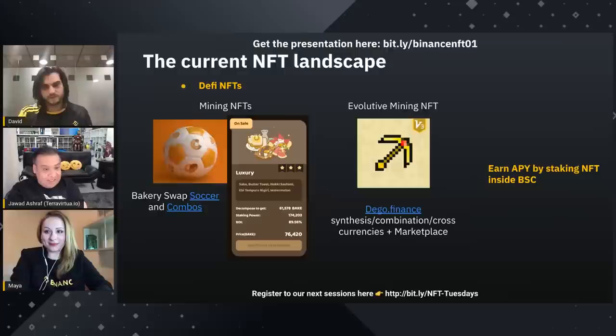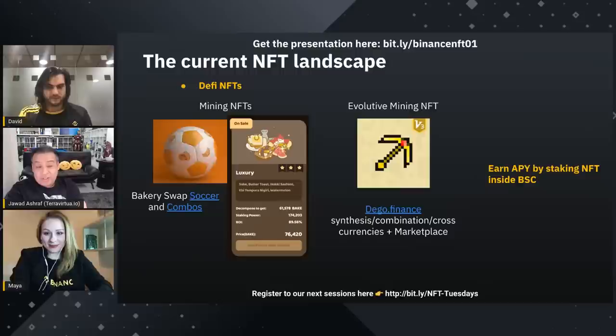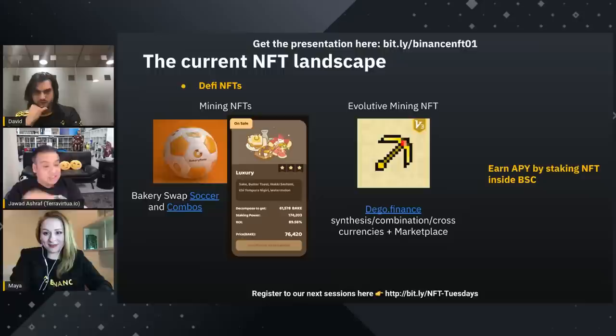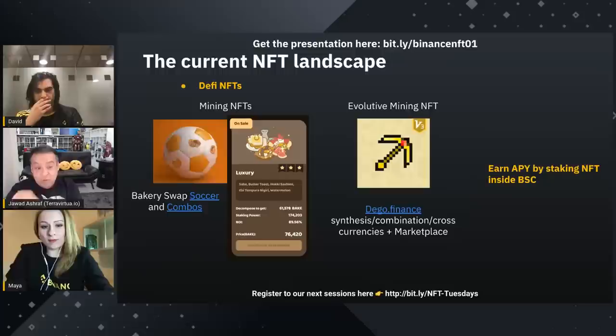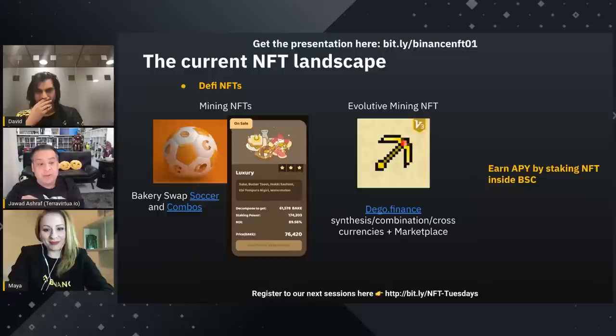For example, at Terra Virtua, we're going to have staking programs. In our staking programs, we're focusing on earning NFTs and rewards as opposed to just earning tokens. Because if you can just mine something and it generates a token, you might as well just buy the token. But if you can mine an NFT which is unique and can only be earned by mining, all of a sudden you have something rare that you can't buy.